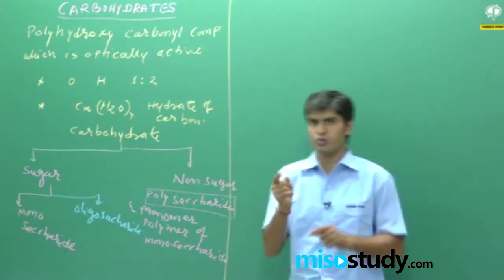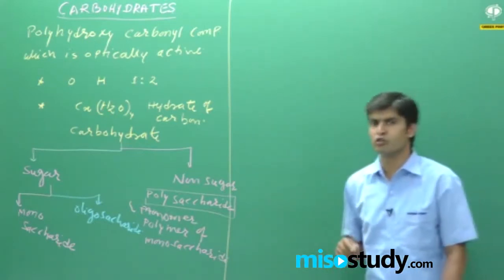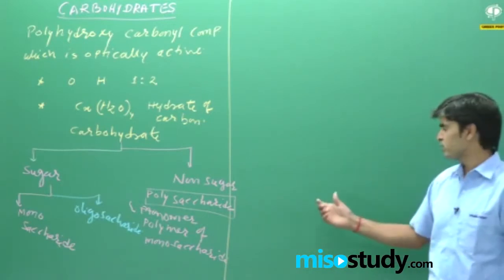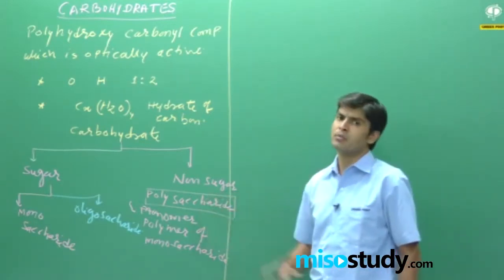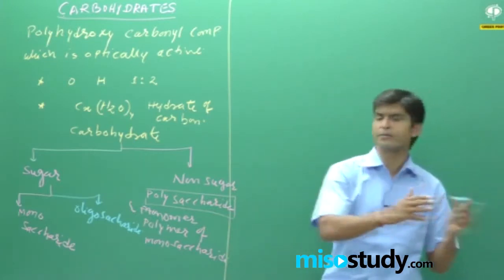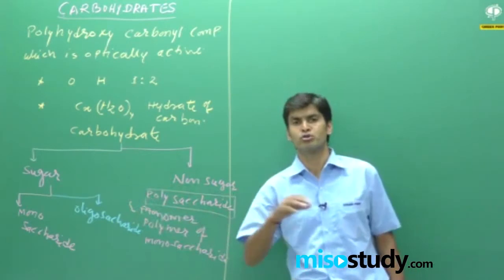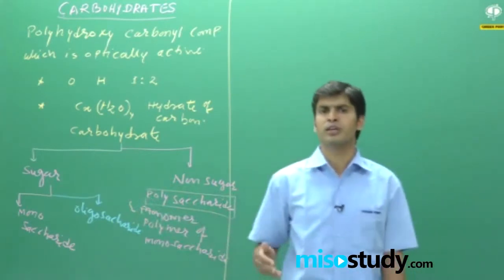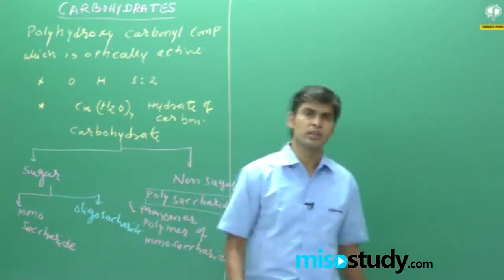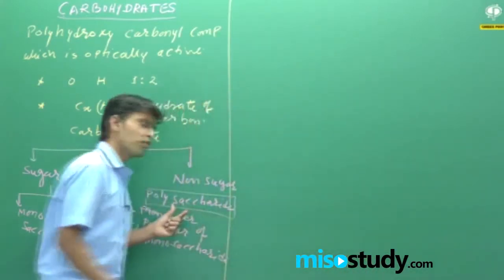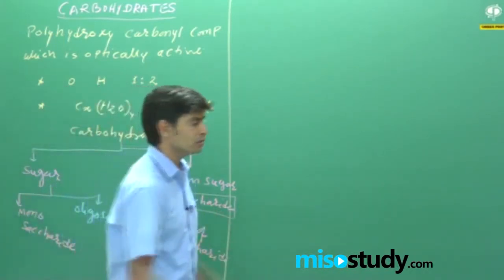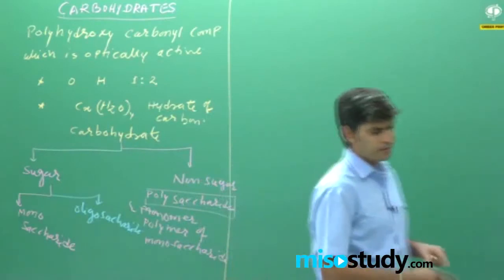If we look at the taste of the molecule, polysaccharides do not have a sweet taste, which is why we put them in the non-sugar category. Sugars have a sweet taste and a crystalline structure — perfect crystalline structure — whereas polysaccharides are amorphous and non-crystalline in nature. This is the structural difference.